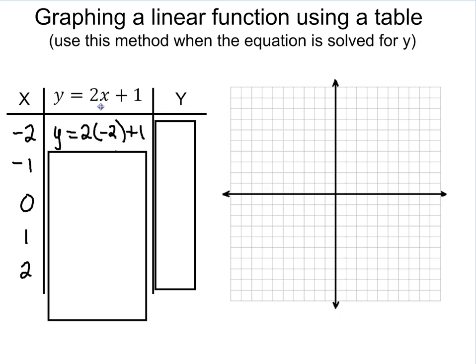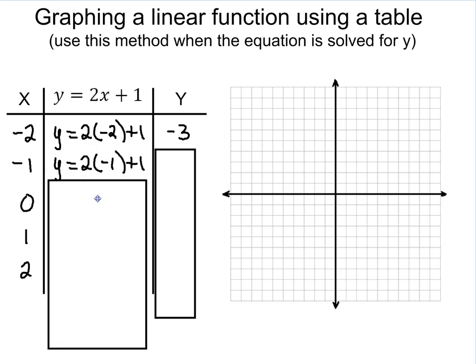So we're going to see in the first one, we're going to plug in the negative 2. So whenever we see x, we plug in negative 2. So we have 2 times negative 2 plus 1. When we solve that, we get y equals negative 3. Next, plug in the negative 1. So you get 2 times negative 1 plus 1, which gives you negative 1.